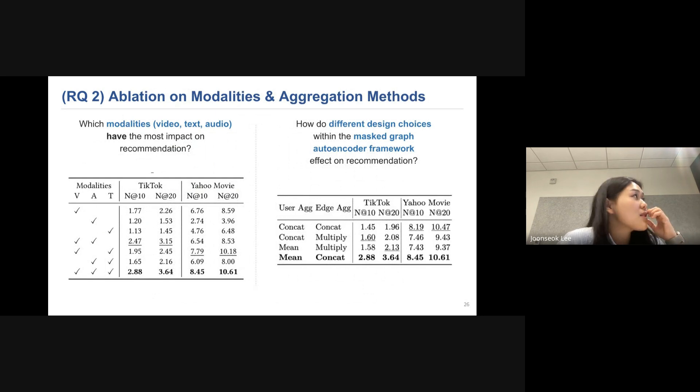And this is the evaluation of modalities and aggregation methods. And if you see on the left, you can see that using all three modalities has the most impact on recommendations. And we also want to see how the different design choices within the mask graph autoencoder framework affect the recommendations. And we can see that using mean for user aggregation and concatenation method for edge aggregation shows the best result.